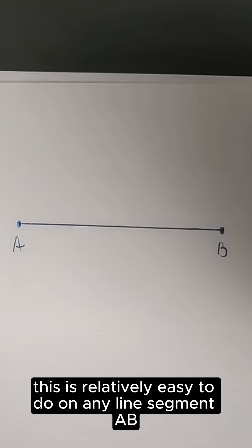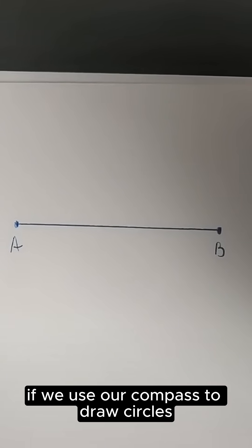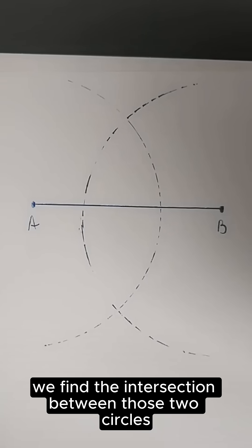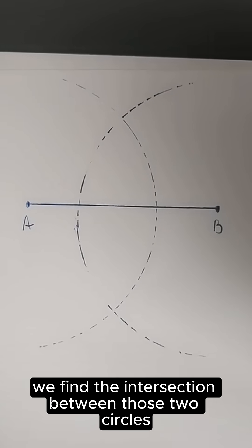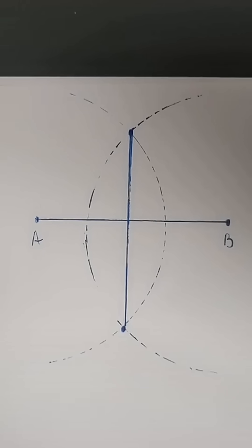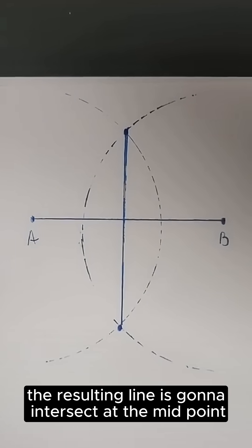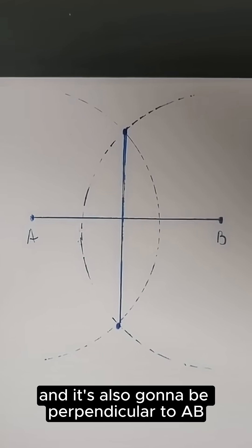On any line segment AB, if we use our compass to draw circles centered at each point A and B, we find the intersection between those two circles. If we connect them, the resulting line is going to intersect at the midpoint of AB, and it's also going to be perpendicular to AB.